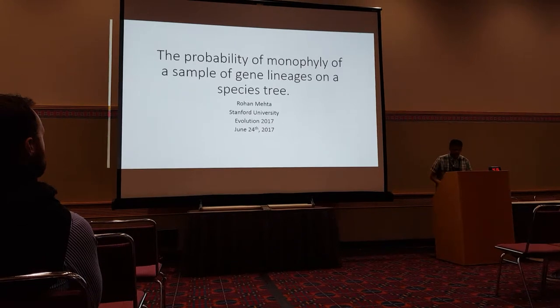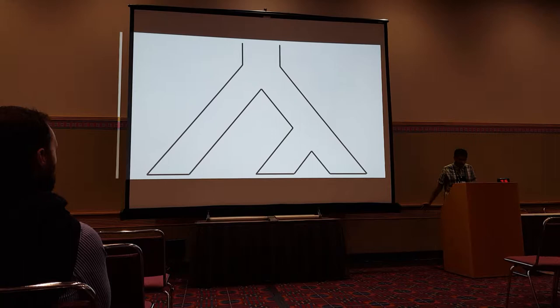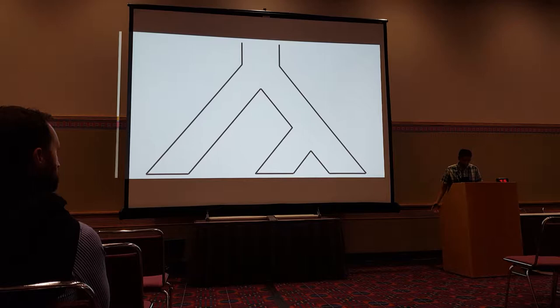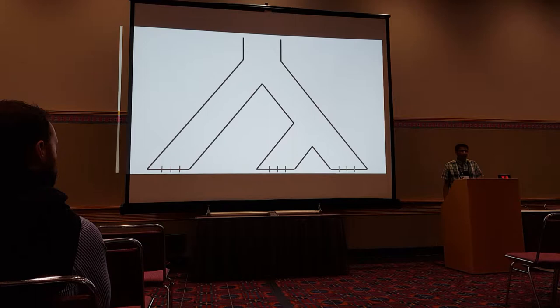I'm going to start with some basic setup just to get everybody on the same page. Suppose you have a species tree — this could be a phylogeny, or a population history, or it could be a guess, a hypothesis, or the truth. It doesn't matter; it just matters that it's a given, and in this case there are three species. Let's say you sample some individuals from each species, sequence them at a bunch of different loci, and make a bunch of gene trees.